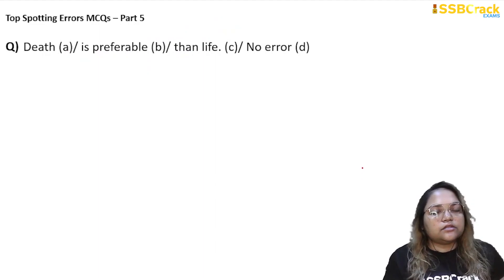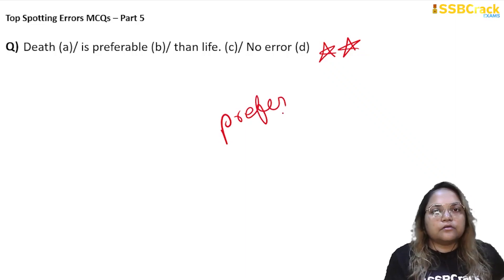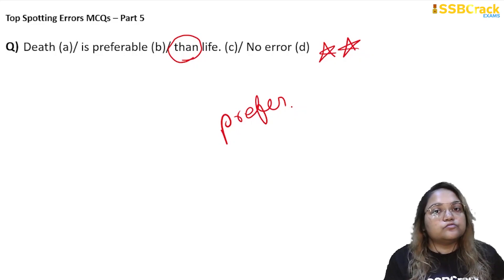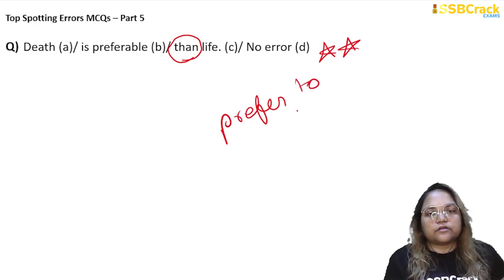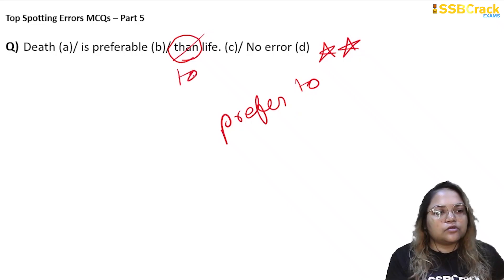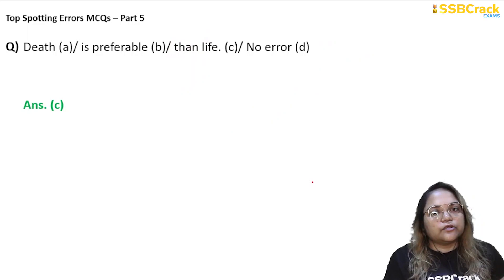Next question: 'Death is preferable than life.' This is a very important rule. Whenever you see the words prefer, preferred, preferable, or preferring, check which preposition is used after it. 99% of the time they will use 'than,' which is wrong. With 'prefer,' you never use 'than' — you use 'to.' So: prefer to, preferred to, preferring to, preferable to. Here 'than' is wrongly used — it should be 'preferable to life.' So C is the right answer.